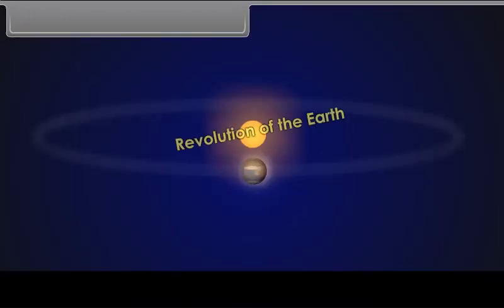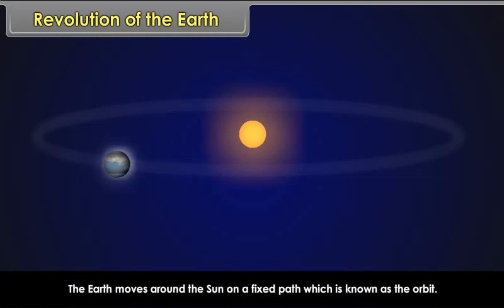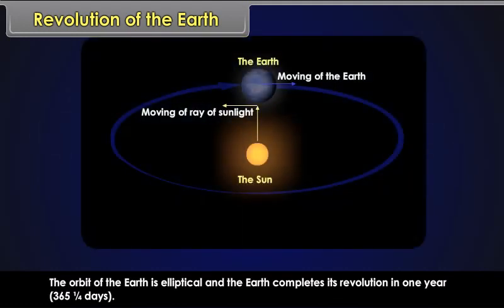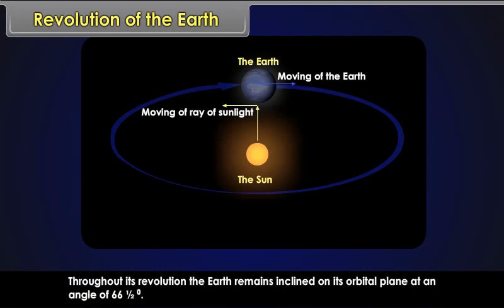Revolution of the Earth. The earth moves around the sun on a fixed path, which is known as the orbit. The orbit of the earth is elliptical and the earth completes its revolution in one year, 365 and one-fourth days. Throughout its revolution, the earth remains inclined on its orbital plane at an angle of 66 and a half degrees.